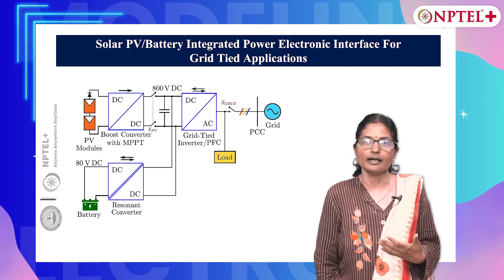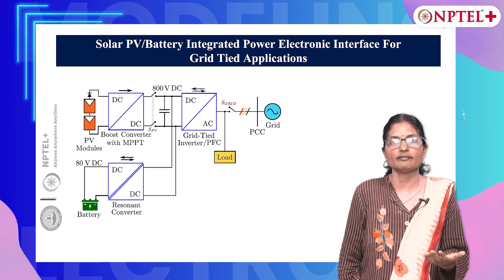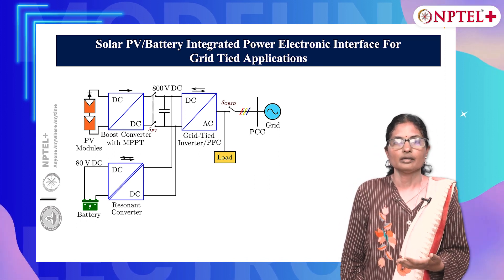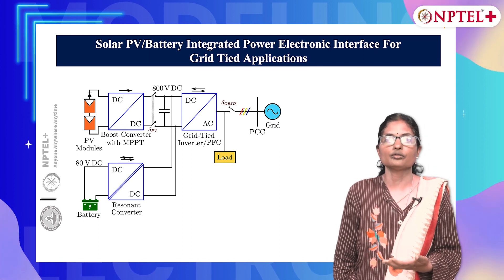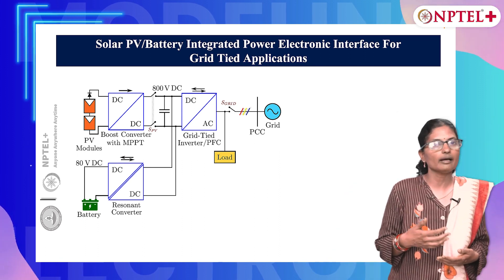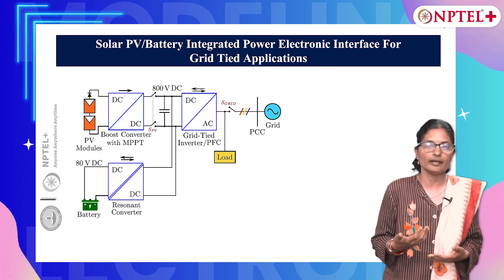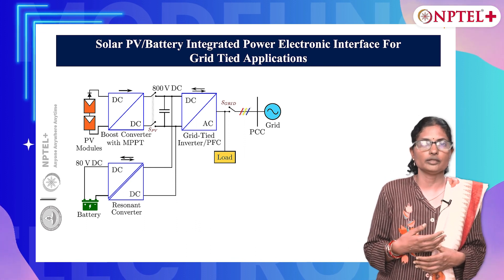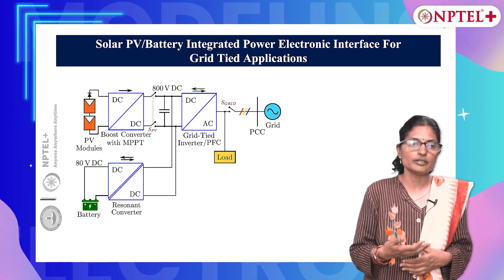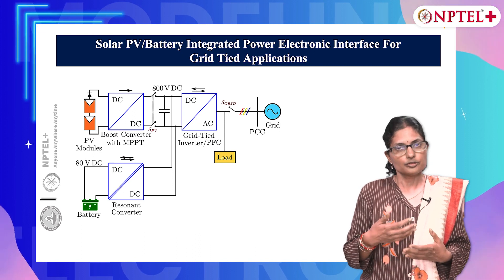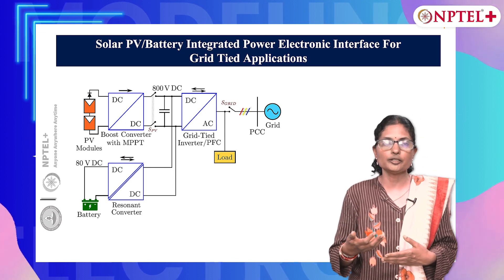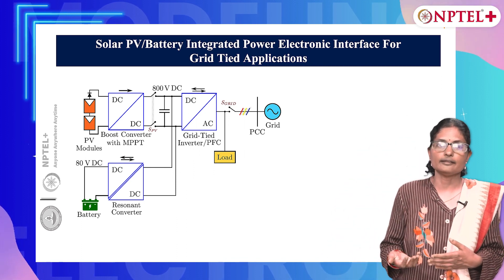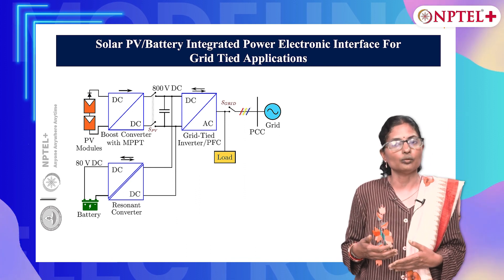To have an understanding of digital control implementations in various power electronic interfaces, we have considered a system throughout this course: a solar PV battery integrated power electronic interface for grid-tied applications. This system comprises DC to DC power interface units fed from battery and solar PV. Together, these form the 800 volt DC bus for the inverter, and the DC to AC inverter is feeding the grid and the local loads.